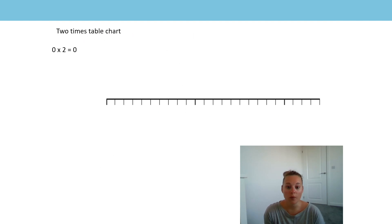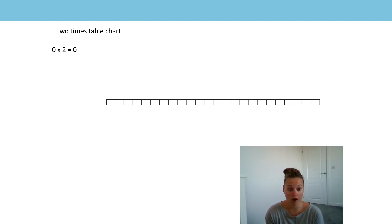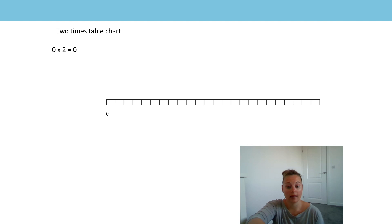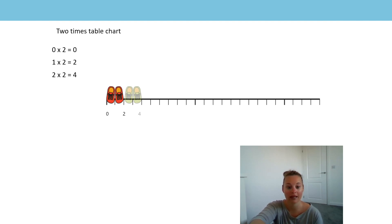I've got a number line and I'm going to build up a number line showing twos. The first multiplication fact is zero times two. At the moment I don't have any two showing because zero twos are zero. Now I have one pair of two — that's one two is two. Now I have two twos, so two twos are four.